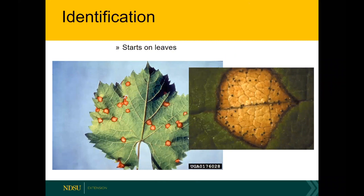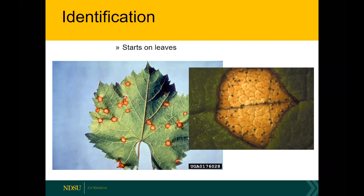Black rot is somewhat easy to identify. It produces wonderfully characteristic lesions — highly characteristic of a fungal pathogen. They have a light-colored brown center and a dark border. They're well-defined; you can easily distinguish where the lesion starts and stops. With this pathogen in particular, if you look at the lesions closely you can see a ring of little black spots, which are fruiting bodies of the pathogen. I'll show you a cross section of those when we go over the disease life cycle in a moment.